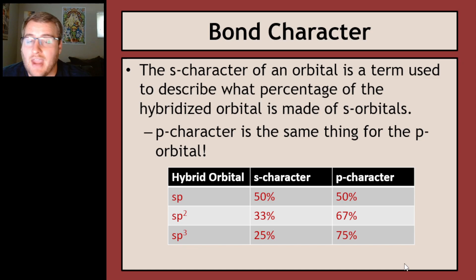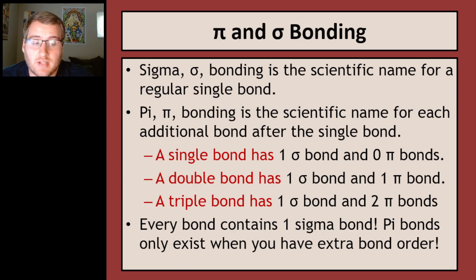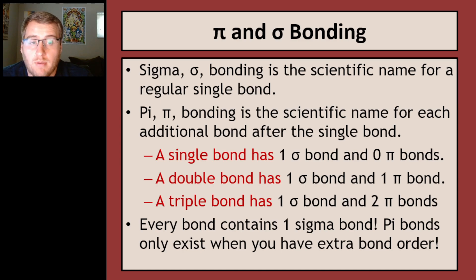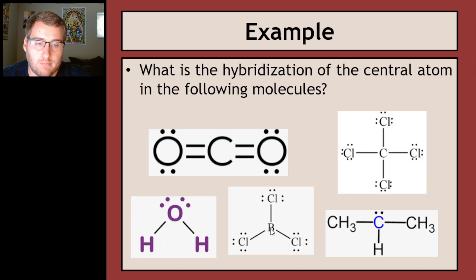We have another topic called pi and sigma bonding. We have two different types of bonds: sigma bonds and pi bonds — they physically look different. A sigma bond is the scientific name for a regular single bond. So if you have a single bond, that is a sigma bond. Going back to the hybridization examples: boron has three sigma bonds because it has three single bonds; the CO2 example has two sigma bonds; the tetrahedral carbon has four sigma bonds; another example has three sigma bonds.